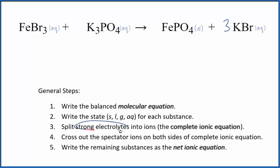Now we can split the strong electrolytes into their ions, and that's going to give us the complete ionic equation. We don't split solids apart though, so everything will be split apart except for the iron 3 phosphate. That looks like this.